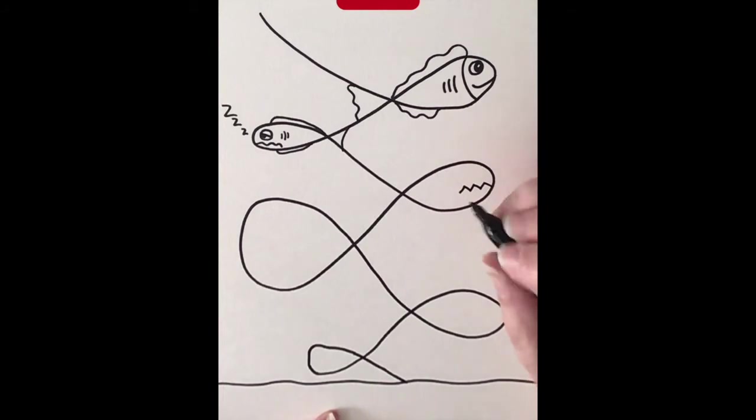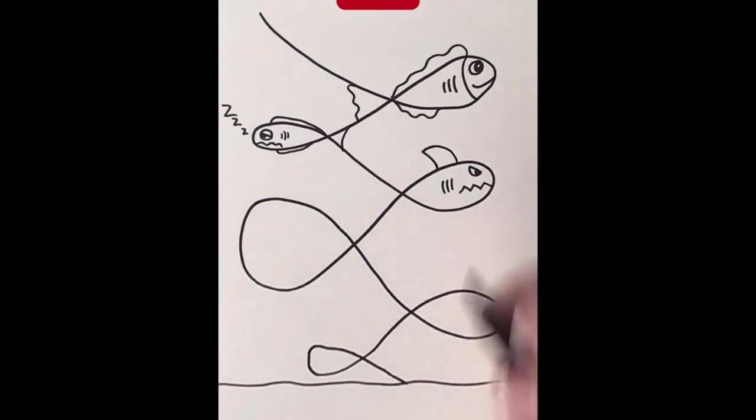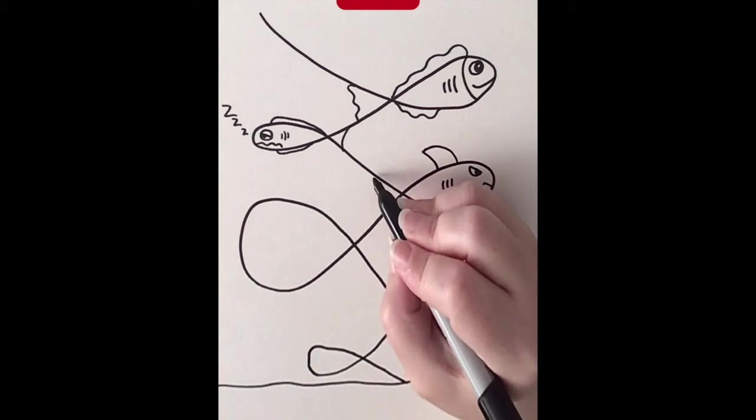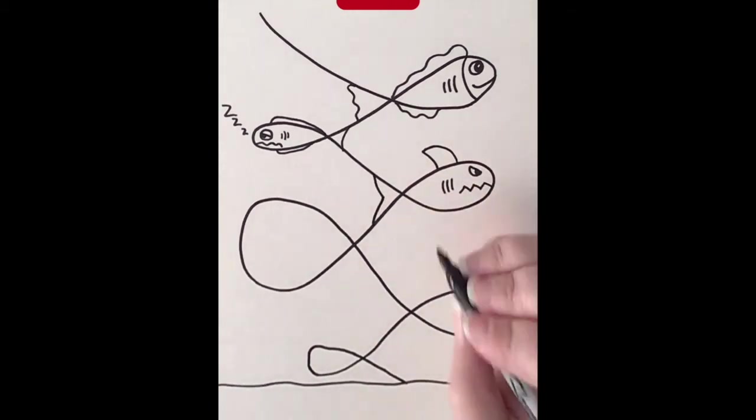Over here I want to make a grumpy face because I think I'm going to make him a shark. Make him have a mad eyebrow. Yeah, this is definitely going to be a grumpy shark. We're going to add his fin, some gills. And sharks kind of have pointy tails, so we're going to add some points to that.